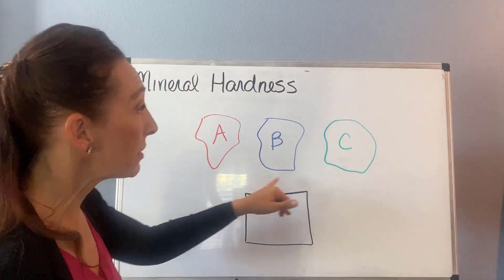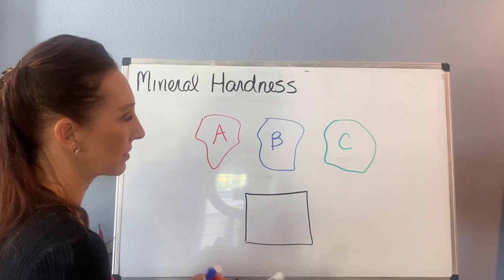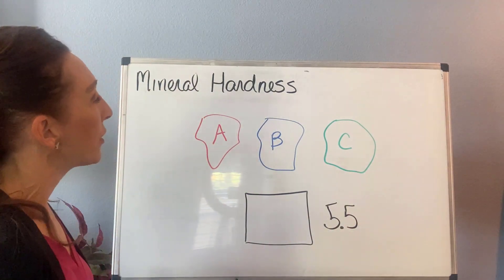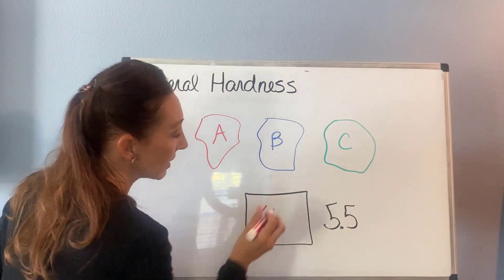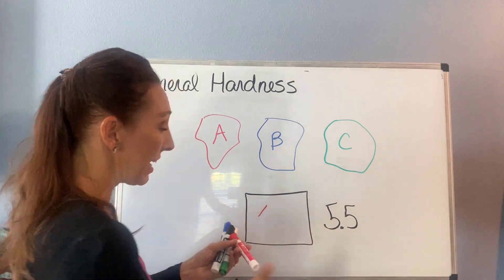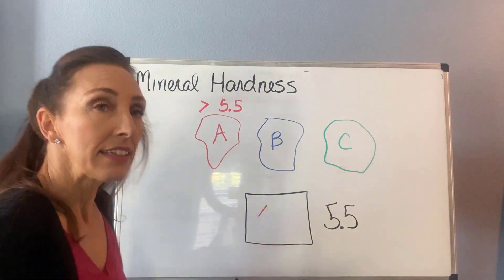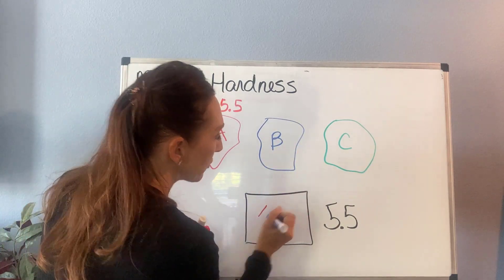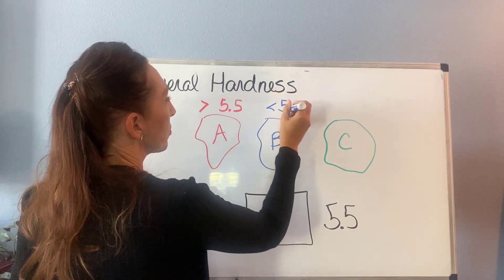We're going to take three minerals — A, B, and C — and try to use them to scratch this glass, which is 5.5. We'll take sample A and scratch it, and let's say A definitely scratches the glass. So we say A is greater than 5.5. Now let's take sample B — we try to scratch the glass and it doesn't scratch it. So we know that B is less than 5.5.